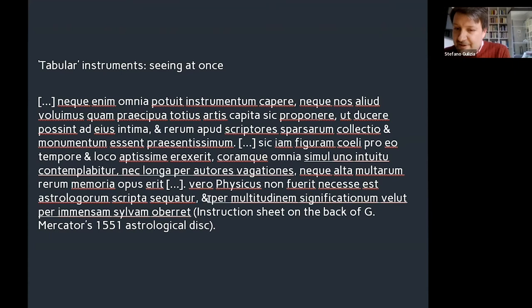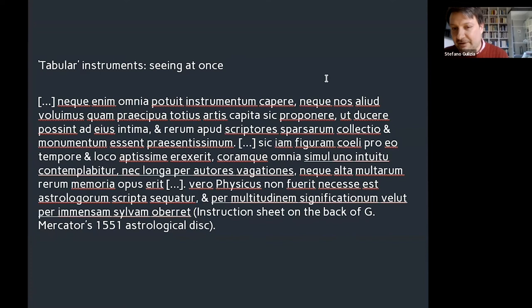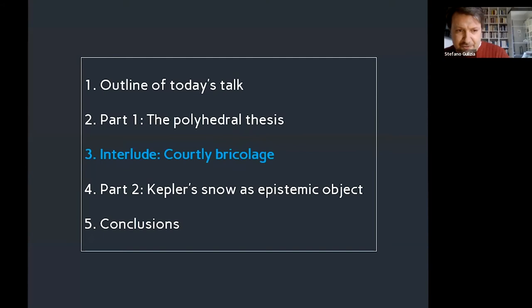I take the point that what Kepler is trying to do in the smaller treatise is also to reflect on the ethical self-fashioning of mathematicians — to construct the readers as people who, because of the ingenuity of the snowflake, will be spared this kind of meandering through the silva, per immensam silvam uberre. The aberration of these meanderings is spared by the artisanal ability to seeing things at once.